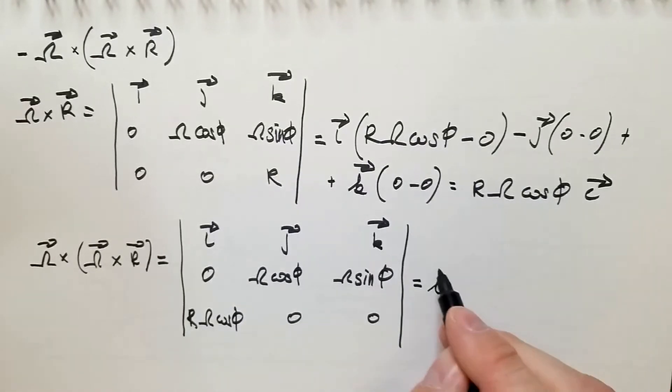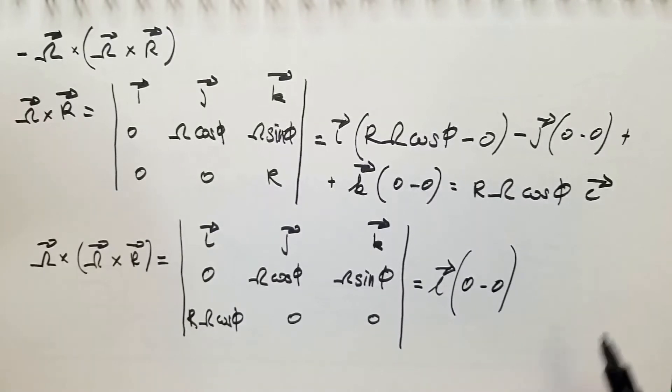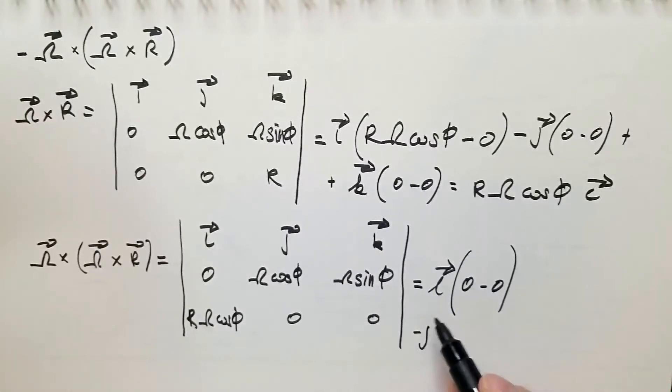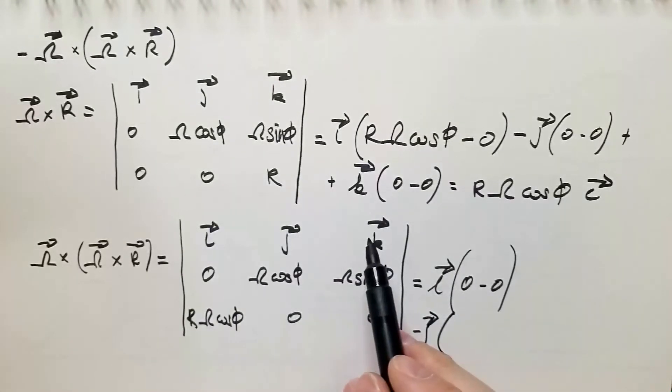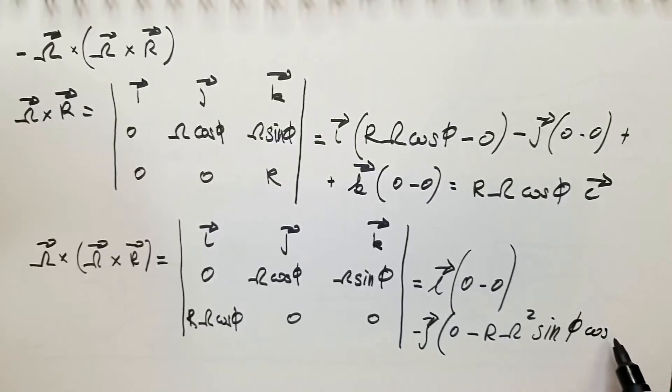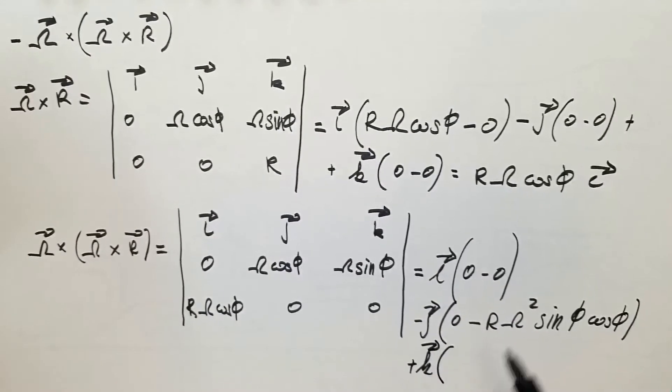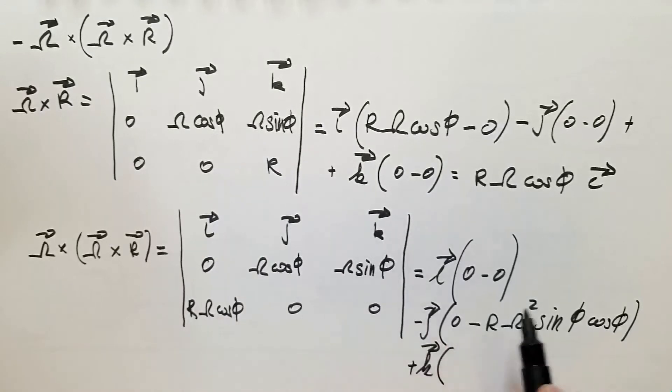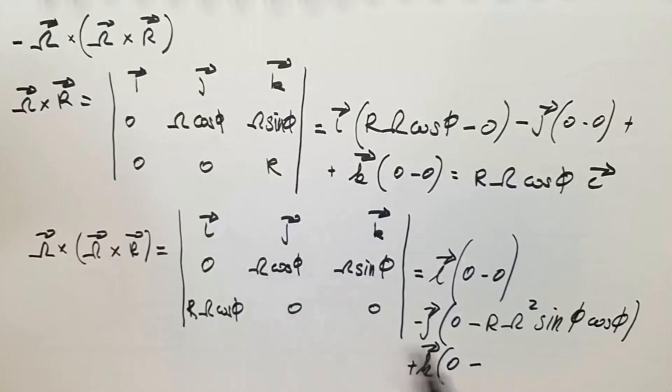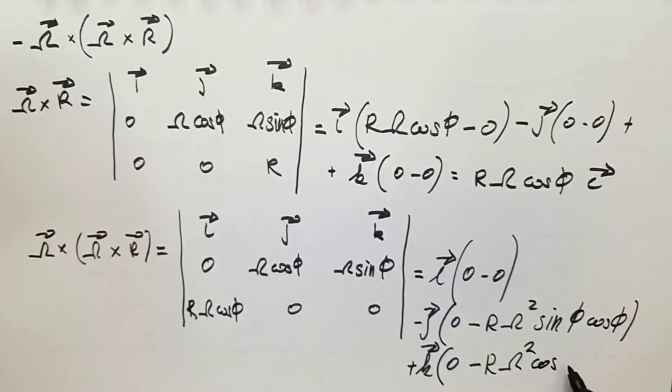So, when I calculate this, is equal to I, and along the I, I have zero minus zero, as you can see, then minus J component. In the J direction, I have zero minus R omega squared times sine phi times cosine phi. And lastly, plus K. In the K direction, I have zero minus this times this, which is R omega squared cosine squared phi.